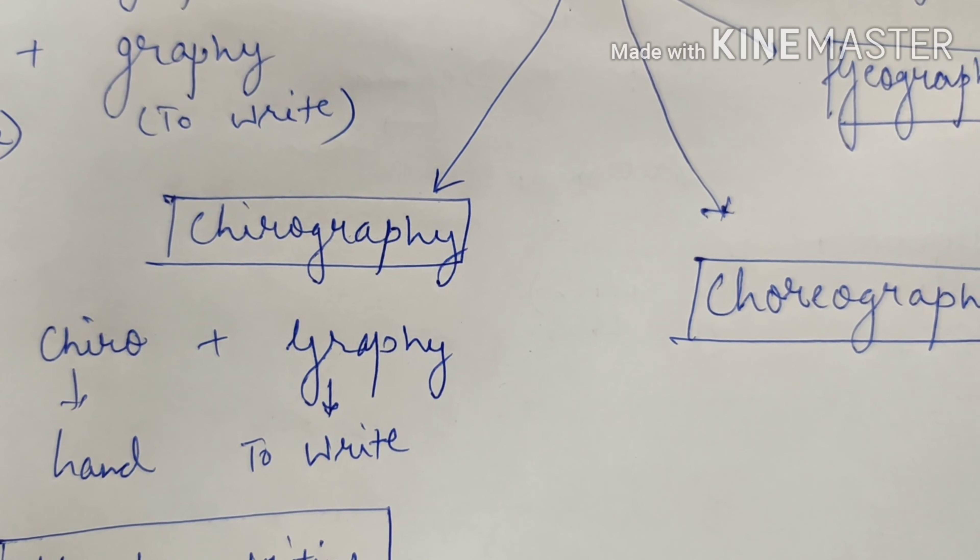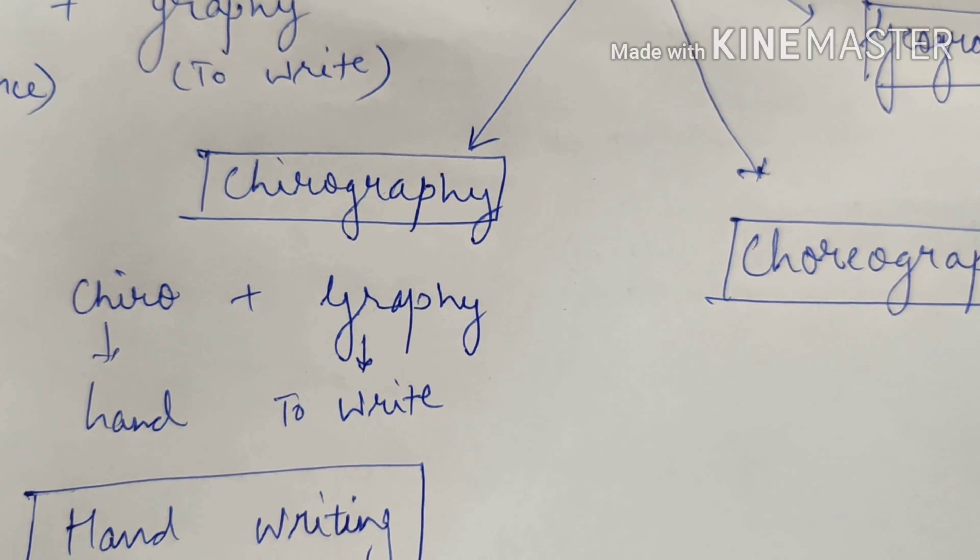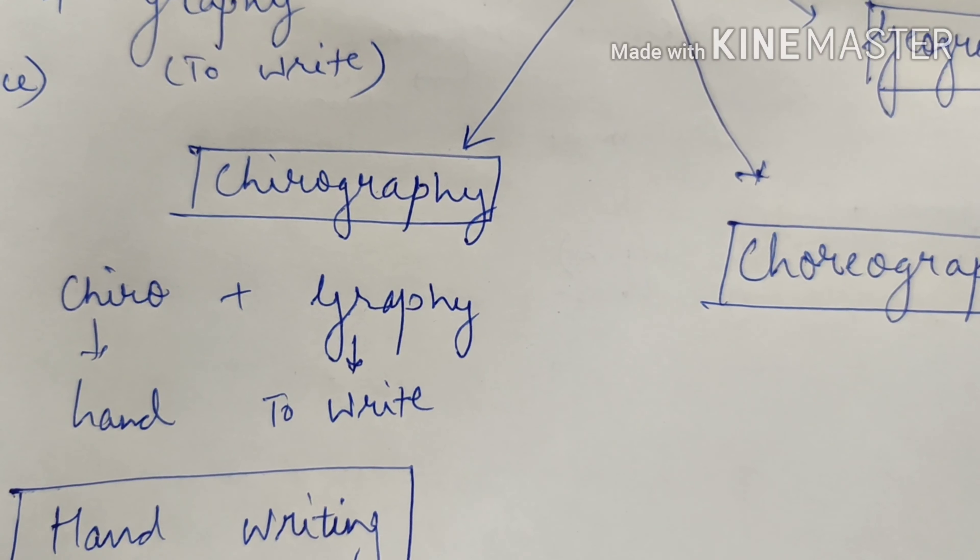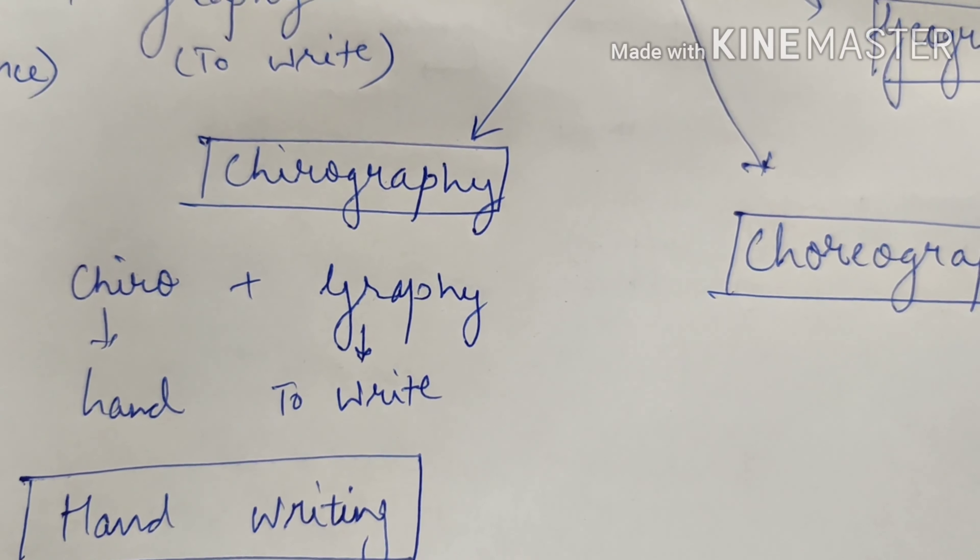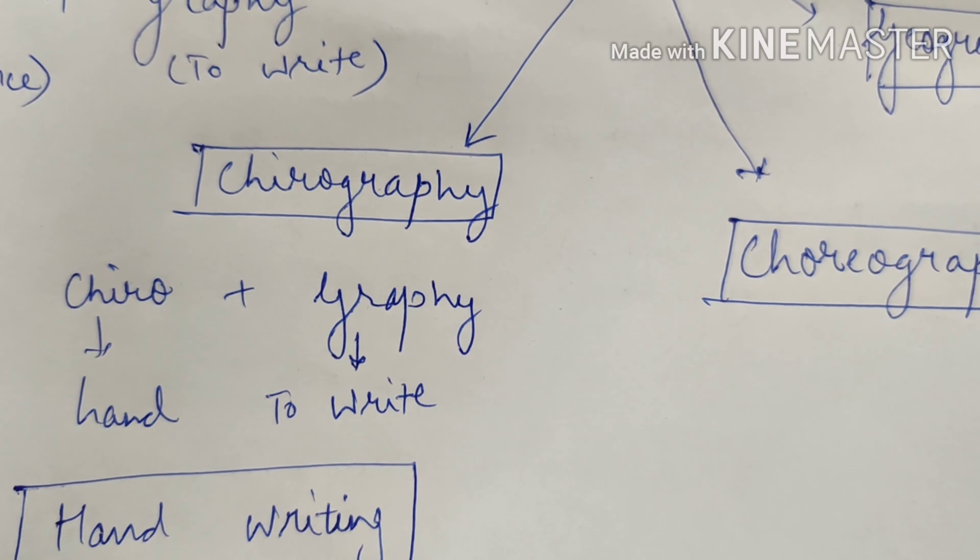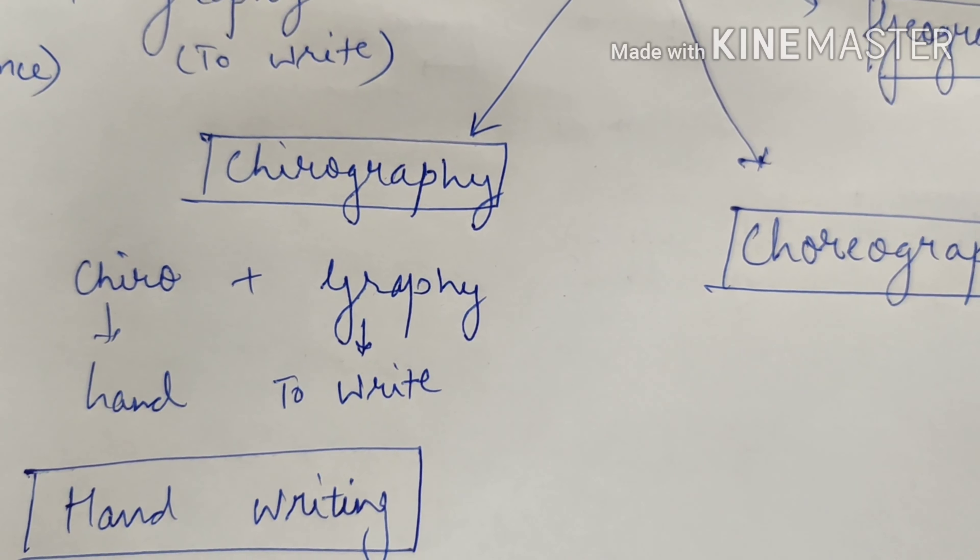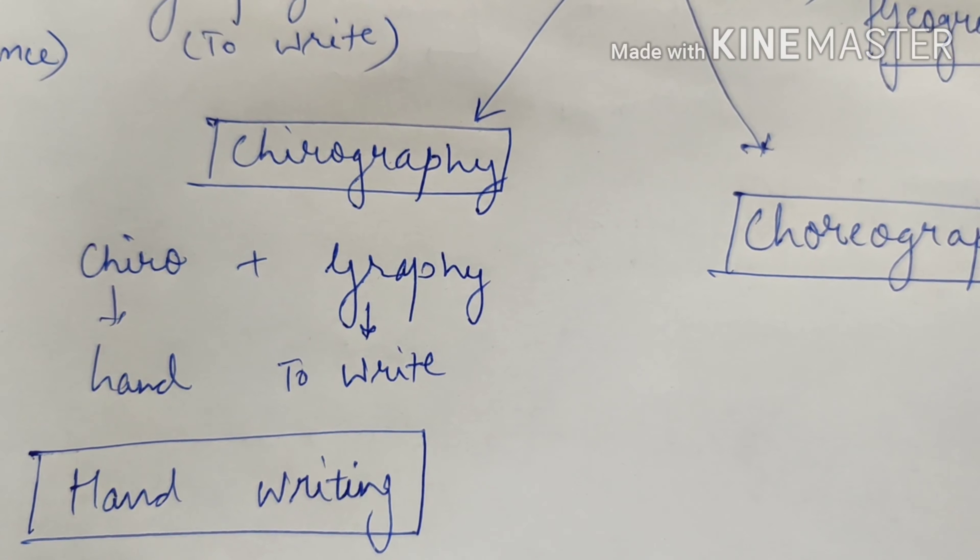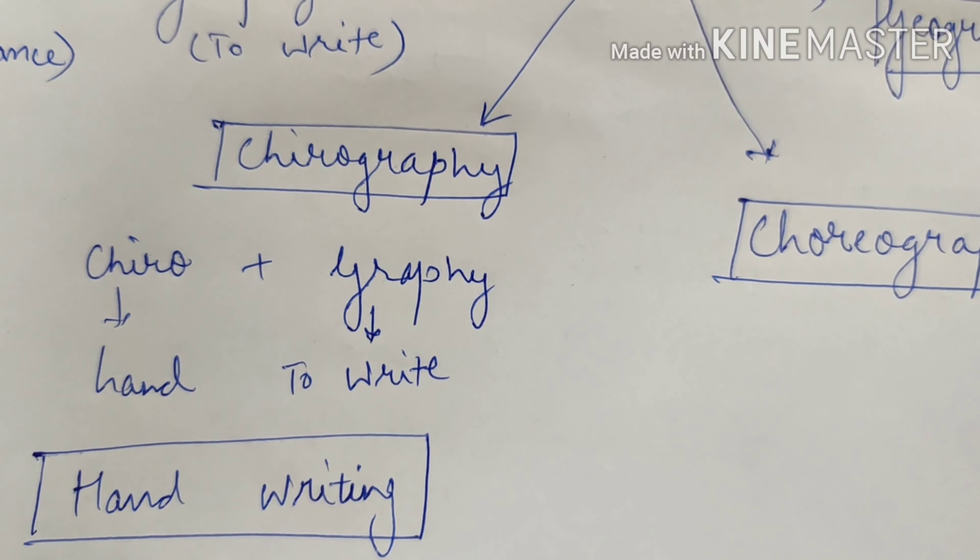Chirography. We've already covered the word root again in the previous lecture. Chiro and graphene. The link to the previous videos and the lectures are there in the description box in case you need to visit for the practitioners. So chirography is one word we covered there. Chirography comes from chiro and graphi. Chiro means hand. Graphi means to write. So chirography refers to the handwriting.